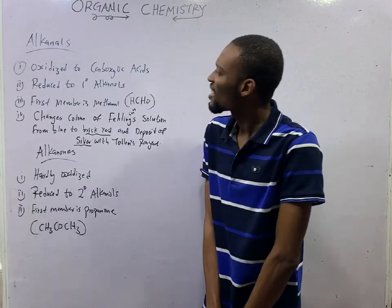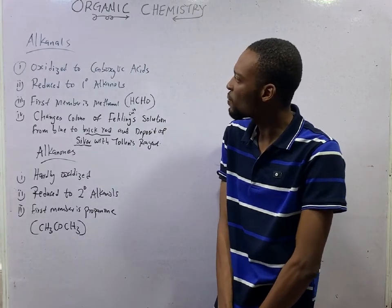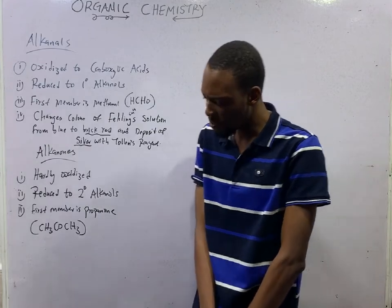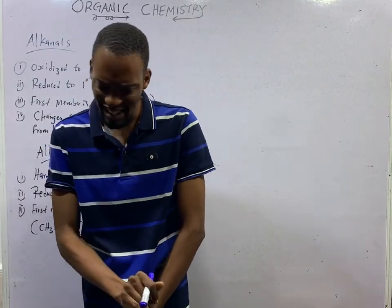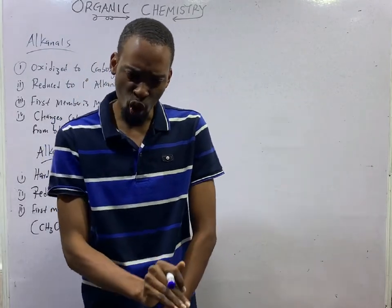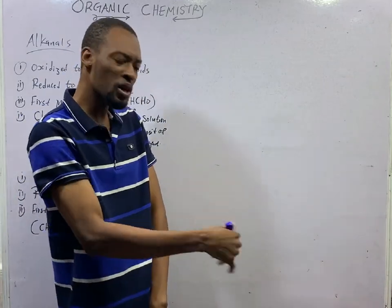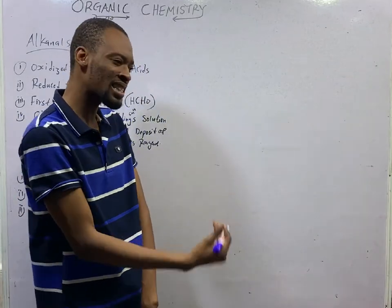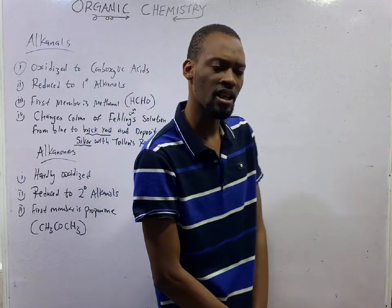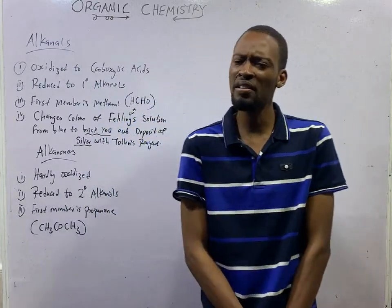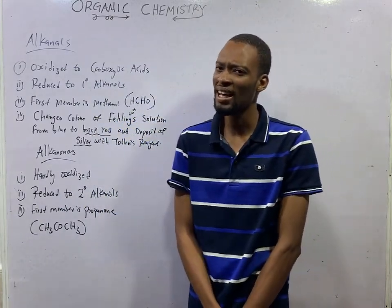Aldehydes are oxidized to carboxylic acid. Remember, when you oxidize Alcohols, you get Aldehydes. When you further oxidize Aldehydes, you get Carboxylic Acid. We've already given this equation under Alcohols.